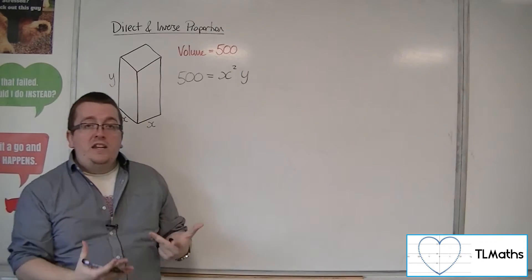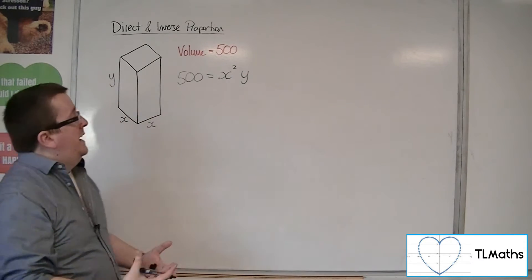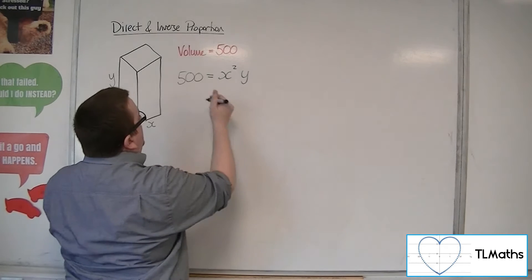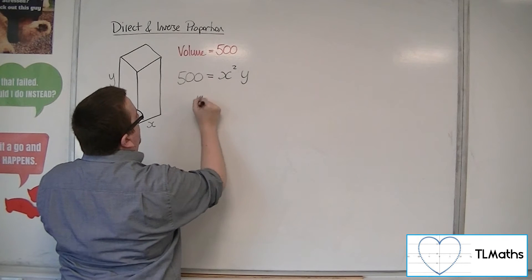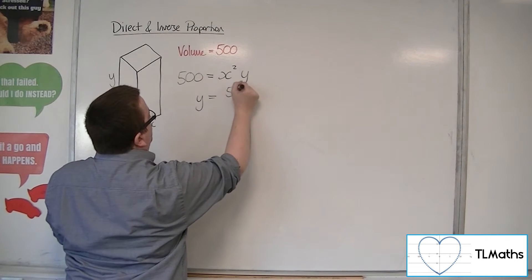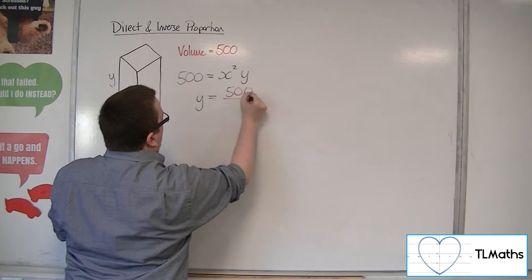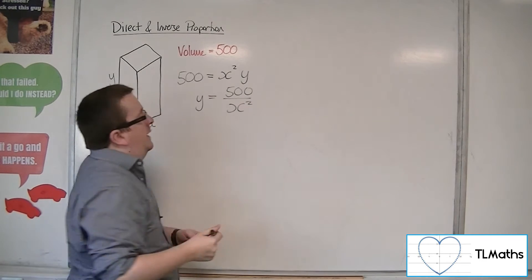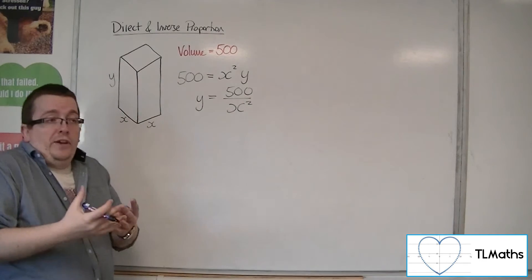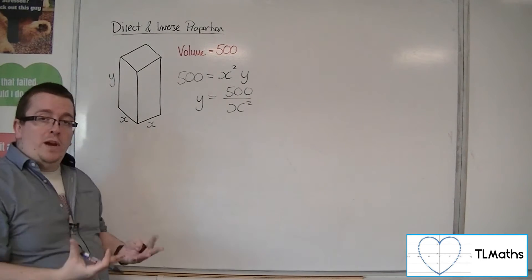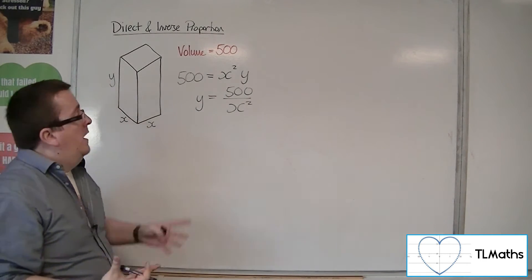What you could then do is say, well, if that's the case, then y must be equal to 500 over x squared. And if I were wanting to graph this situation, I know what that graph looks like.